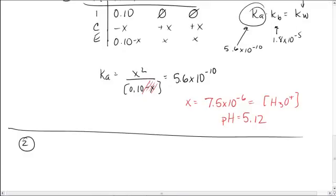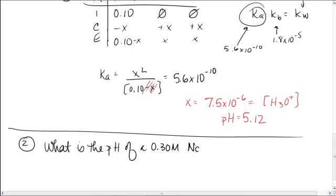All right. Second example. We'll deal with that sodium fluoride. What is the pH of a 0.3 molar NaF solution? And the Ka for HF is 7.2 times 10 to the minus 4.